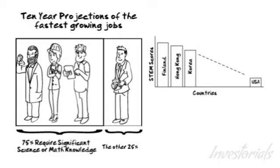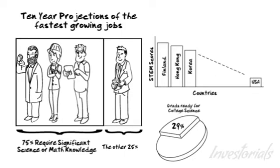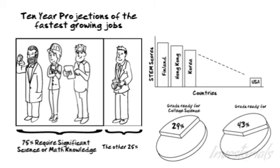And the 2010 ACT College and Career Readiness Report found that only 29% of tested 2010 U.S. graduates were considered college-ready in science, while only 43% were college-ready in mathematics.